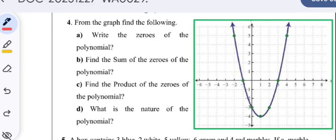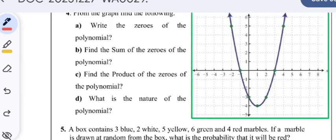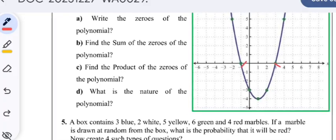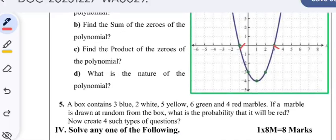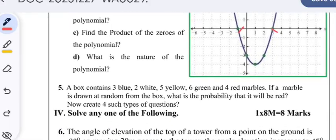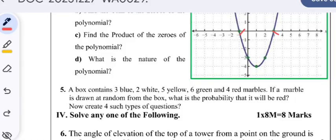Write the zeros of the polynomial. Here clearly the zeros are -1 and 3. Find the sum of these zeros: -1 + 3 is +2. Find the product of the zeros: -1 × 3 is -3.